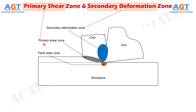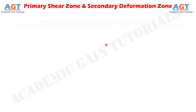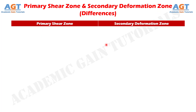Primary deformation is the zone where maximum deformation occurs and occurs around the shear plane. On the other hand, secondary deformation zone has medium level of deformation and generally occurs in the tool-chip interface. Let's look into the basic differences between primary shear zone and secondary deformation zone in a tabular form.